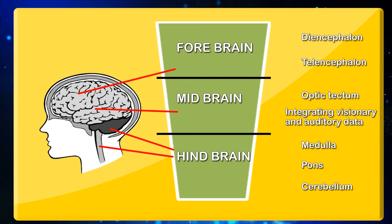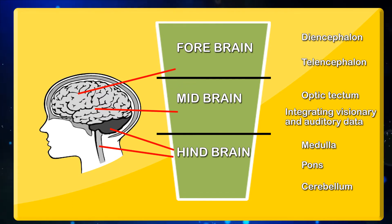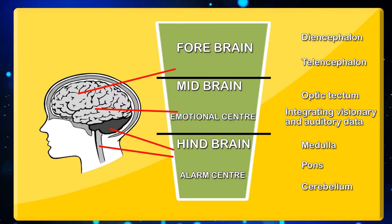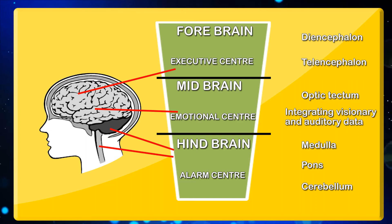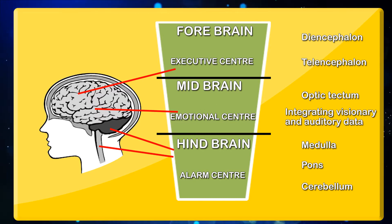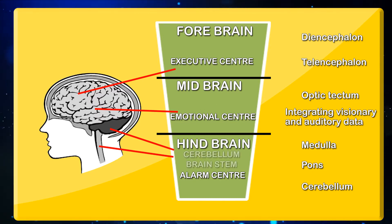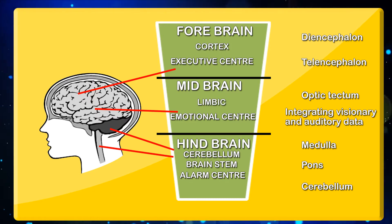The three parts of the brain — hindbrain (otherwise called the alarm center), midbrain (called the emotional center), and forebrain (called the executive center) — grow sequentially from bottom to top, that is, from the least complicated part, the brainstem in the hindbrain, to the more complex area, the cortex in the forebrain. In between the hindbrain and the forebrain is a limbic region called the midbrain.